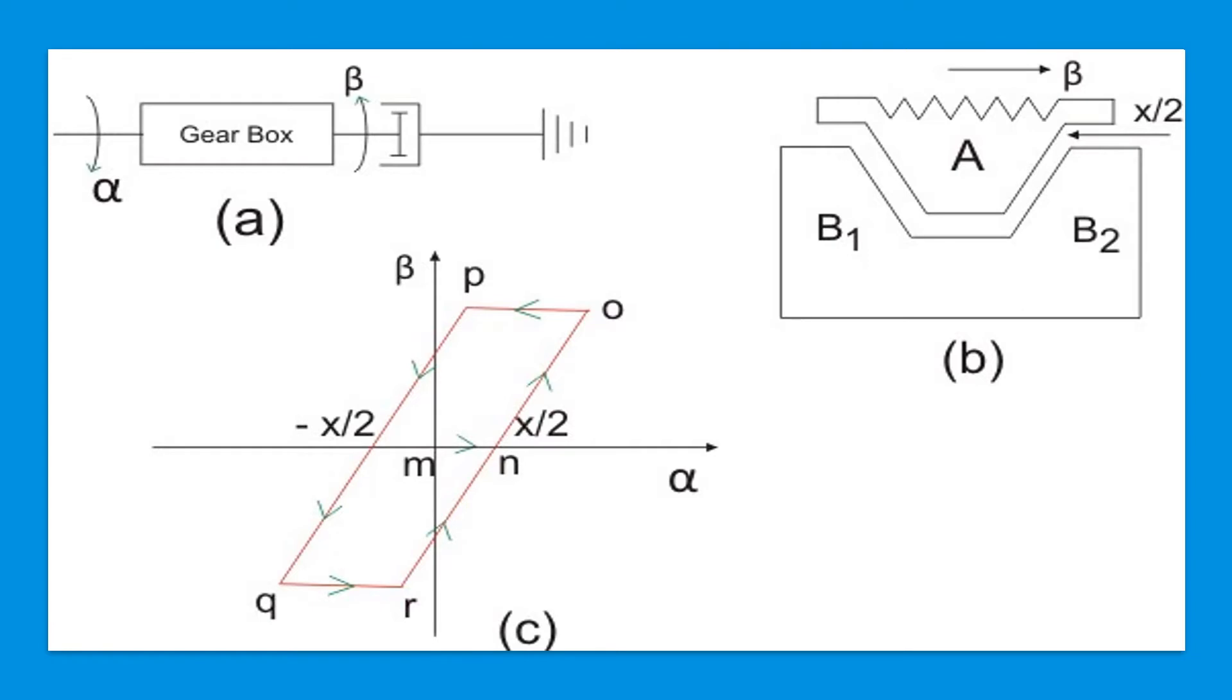This output motion corresponds to the segment MN of Figure C, and after the contact is made, the driven gear rotates counterclockwise through the same angle as the drive gear when the gear ratio is assumed to be unity.